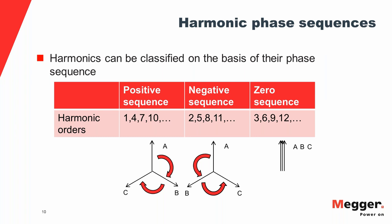Based on phase relationships, harmonics are classified into three categories: the fundamental, 4th, 7th, 10th, 13th — and so on — are positive sequence harmonics; the 2nd, 5th, 8th, 11th, 14th are negative sequence harmonics; and multiples of the third harmonic — the 3rd, 6th, 9th, 12th — are zero sequence harmonics.